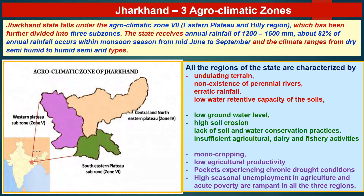Now we will discuss the climatic conditions of Jharkhand. The Jharkhand state falls under agro-climatic zone 7, named as the Eastern Plateau and Hilly Region. Jharkhand's climatic zones are divided into three sub-zones. The state receives annual rainfall of 1200 to 1600 mm, and around 82% of annual rainfall occurs within monsoon season, which is from mid-June to September. The climate in Jharkhand ranges from dry semi-humid to humid semi-arid type. The three agro-climatic zones are: 1. Central and North-Eastern Plateau, 2. Western Plateau, and 3. South-Eastern Plateau.